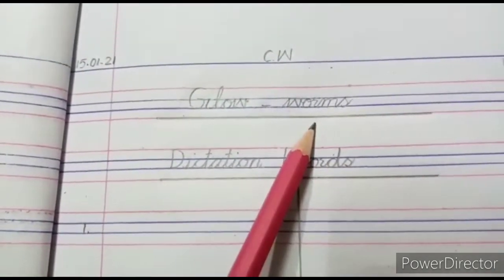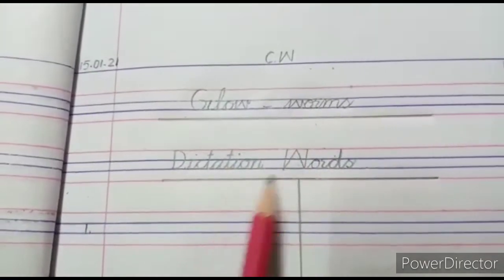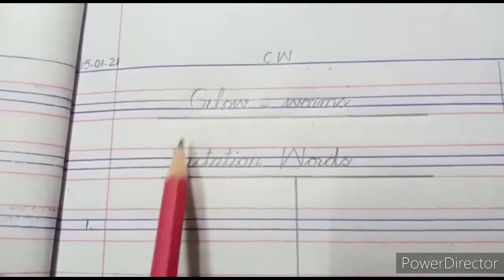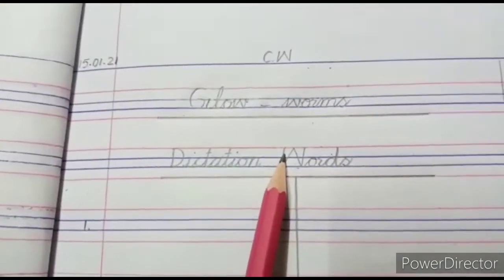Glowworms is your name and dictation words. You have to do this. Like I have written from the capital letters, dictation words. Then I have written from the capital letters.